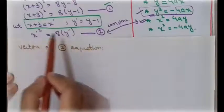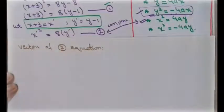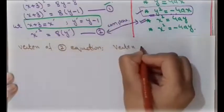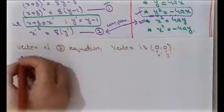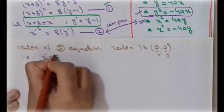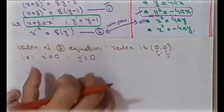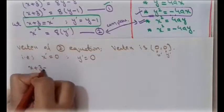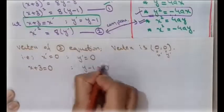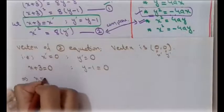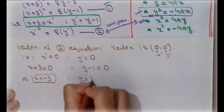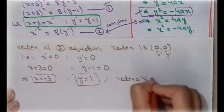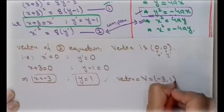In the standard form, the vertex of the second equation is at (x′, y′) = (0, 0). Substituting back: x + 3 = 0 gives x = −3, and y − 1 = 0 gives y = 1. So the vertex of the first equation is V(−3, 1).